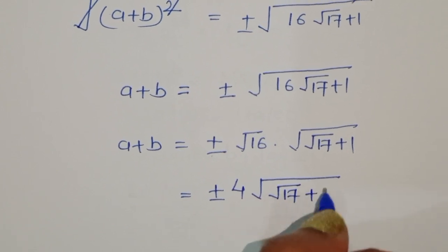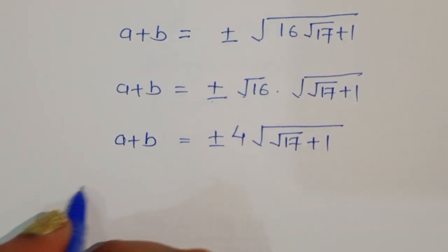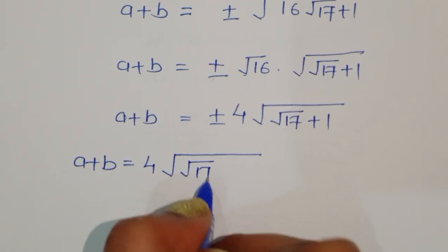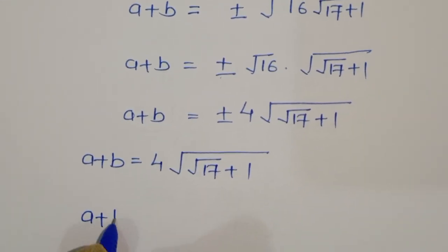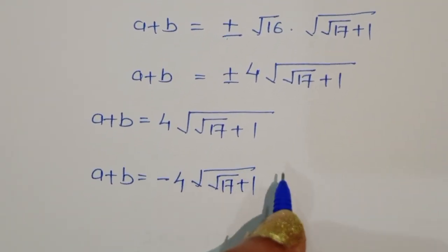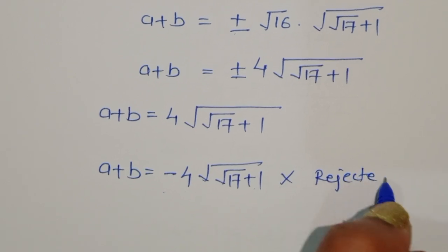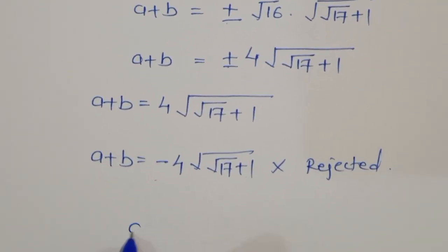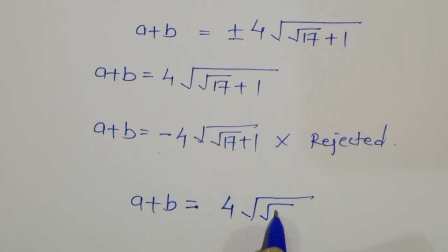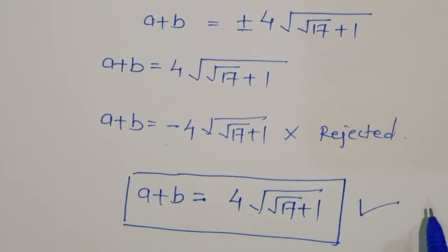We get two values: a + b = 4√(√17 + 1) or a + b = -4√(√17 + 1). Since the condition states a + b > 0, we reject the negative value. Therefore a + b = 4√(√17 + 1). This is the final answer.